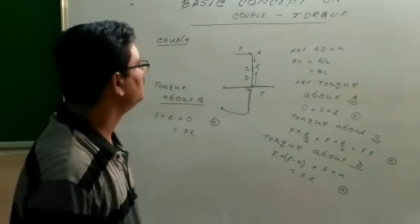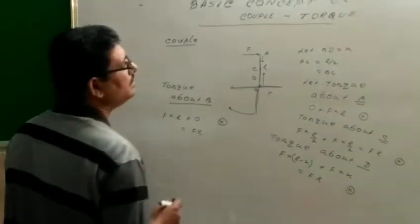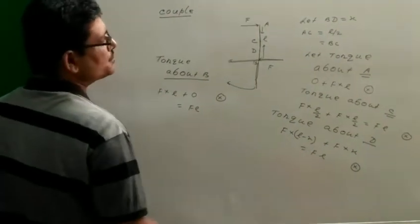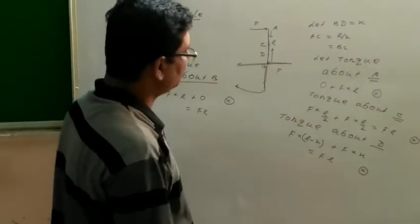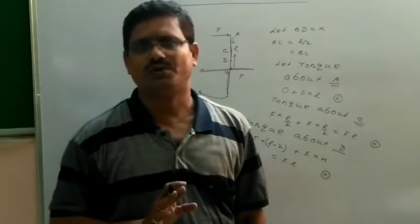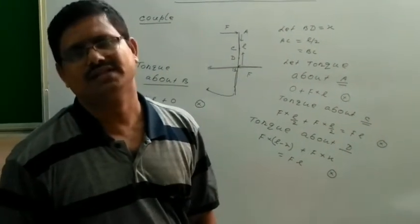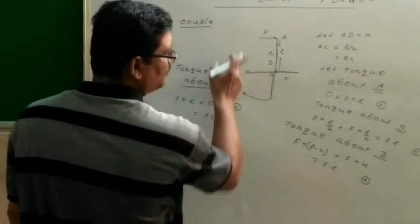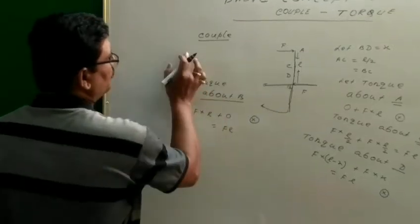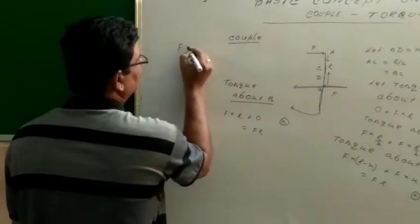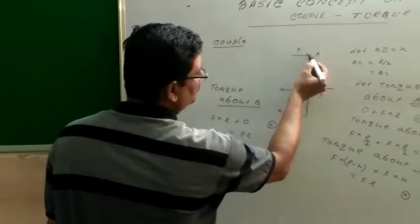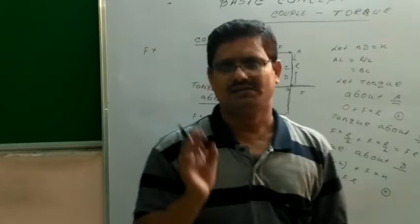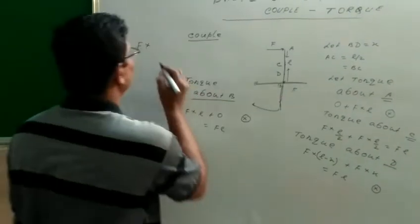So we can conclude about couple torque: a couple force will create a torque and the torque will be the same for all points along the length of the rod. When we calculate couple torque, we multiply any one of the forces by the perpendicular distance between the forces. Here the perpendicular distance between the forces is L, therefore the torque equals FL.